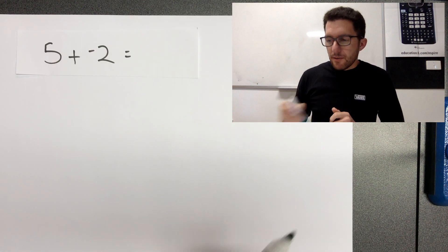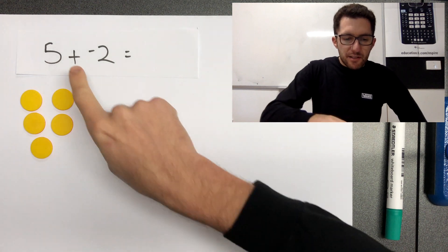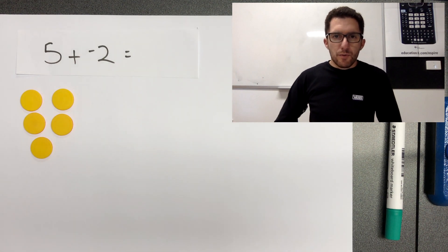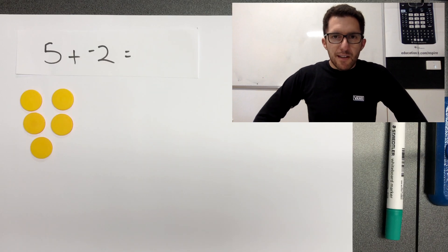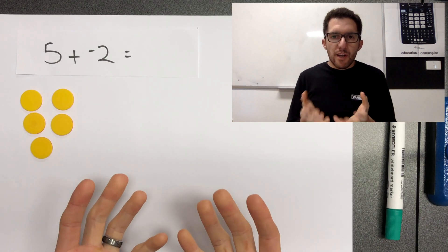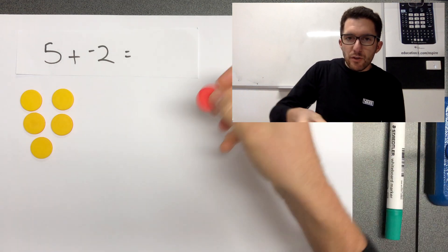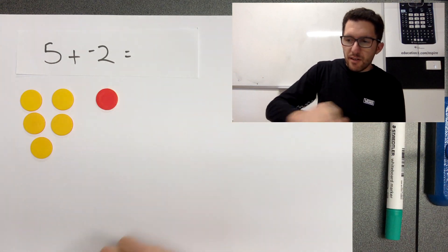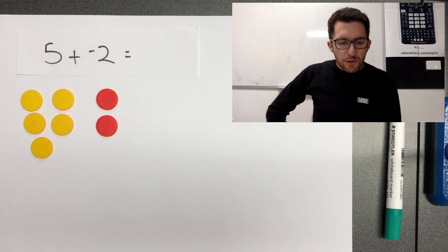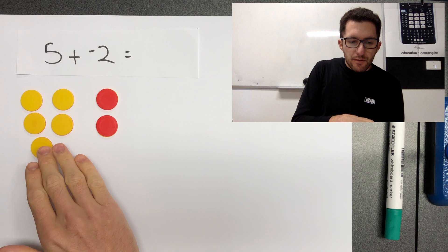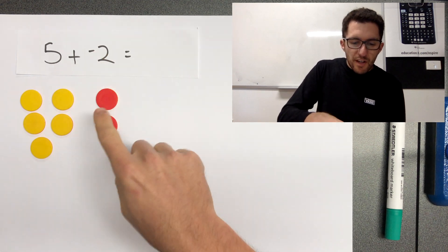Let's have a look at this one. Five plus negative two. How can we plus negative two? How could we show that with our counters? Well, remember, we can use the red counters as negatives, they are the negative of the yellows. So five yellows plus two negatives.